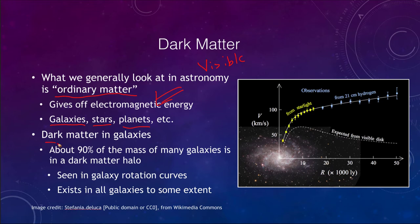Dark matter is different. It turns out that about 90 percent of the mass of many galaxies is located in a dark matter halo. How can we see that it exists? We look at galaxies like this and we measure the rotation of their stars and the gas that we see in them.